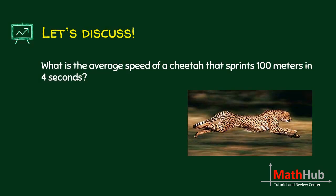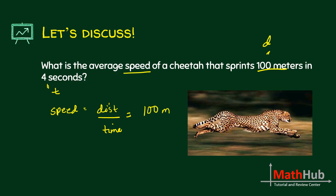What is the average speed of a cheetah that sprints 100 meters in 4 seconds? Speed is distance over time. Distance is 100 meters and time is 4 seconds. So 100 divided by 4 is 25 meters per second.